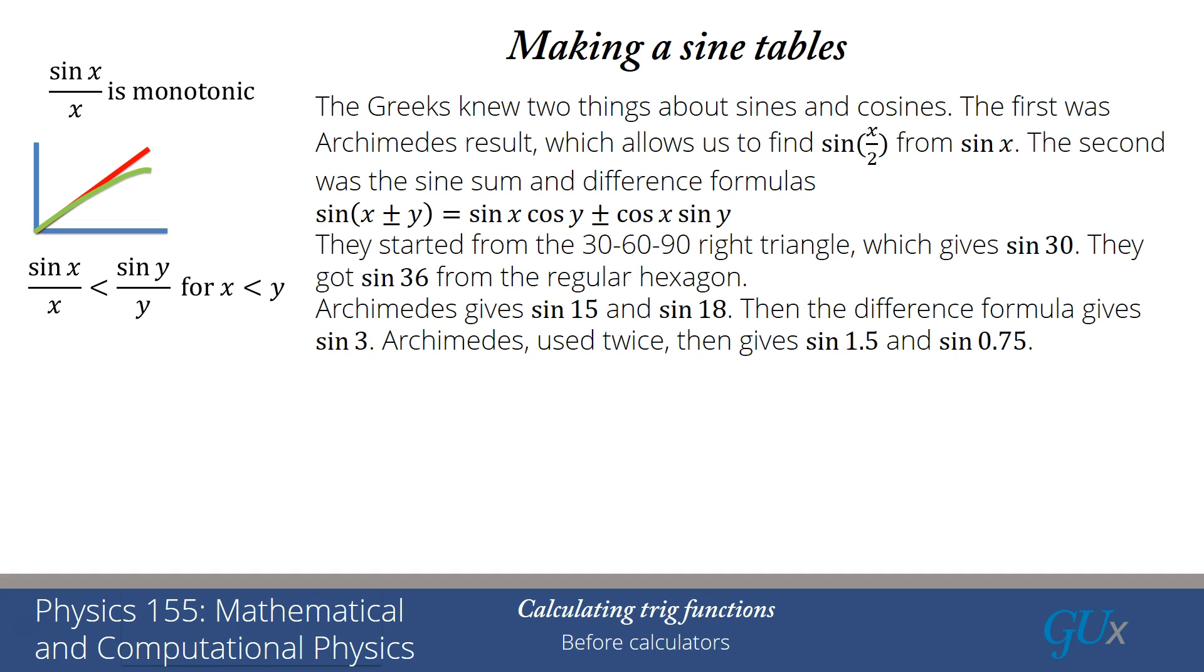And a monotonic function means that sine x over x will be less than sine y over y if x is less than y. Now I'm going to use that in a slightly rearranged form. I'm going to look at sine x over sine y is less than x over y for x less than y. And I'm going to pick x equals 1.5 and y equals 1.